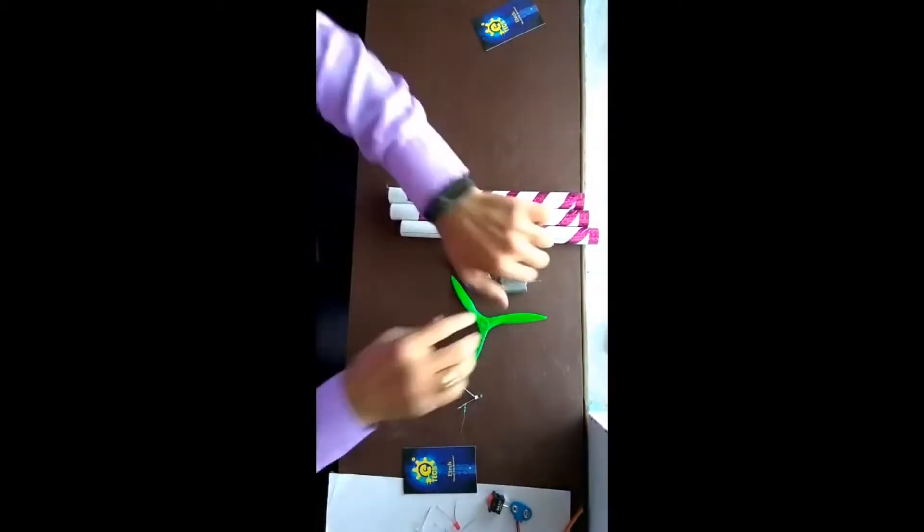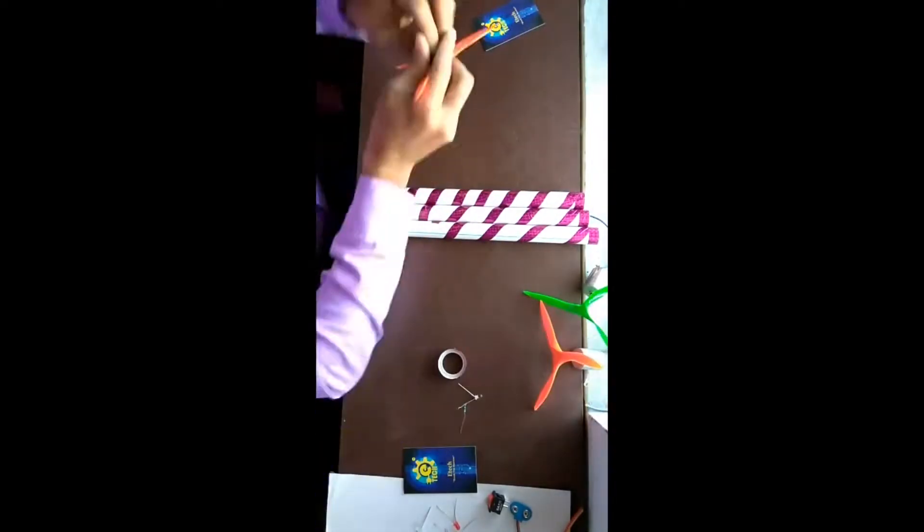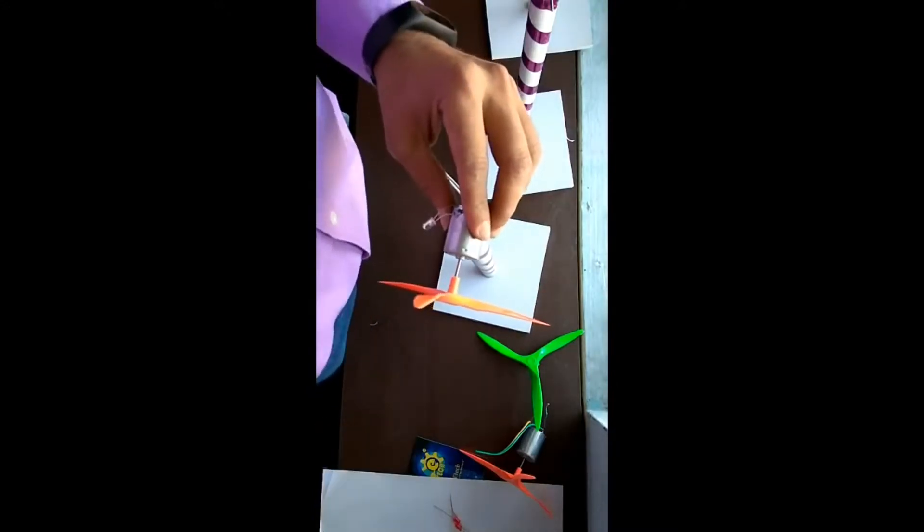So we are taking three PVC pipes, one motor and fan. The fan is connected to the motor and we have to stick the motor on the top of the wind turbine.